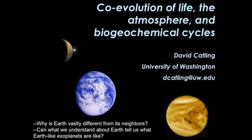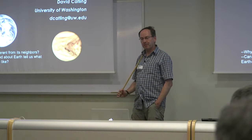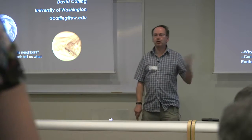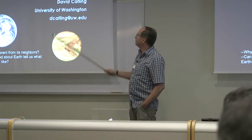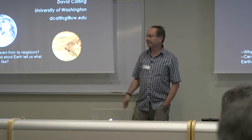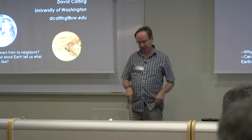I consider myself one of those planetary scientists that Stephen Cain mentioned in his talk. I'm at the University of Washington in Seattle, which is perhaps better known as the home of Starbucks and Microsoft. But there's also a big university there. I'm in the Earth and Space Sciences Department, but I also collaborate with people in the Astronomy Department. What I'm going to talk about today is the coevolution of life and the environment and how geochemical cycles have changed.